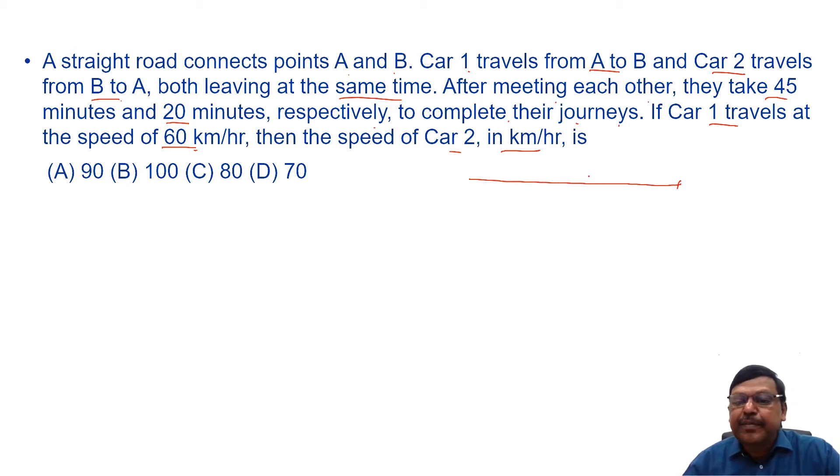See there are two places A and B. Car 1 travels from A to B. Car 2 travels from B to A at the same time. They start at the same time, so obviously when they travel like this, they meet after some time. They met at this place, let's say. After meeting each other, they take 45 minutes and 20 minutes respectively to complete the journeys.